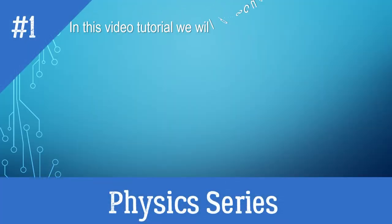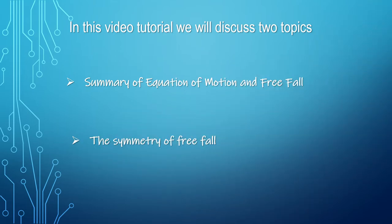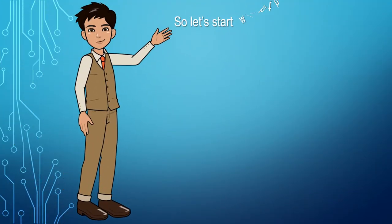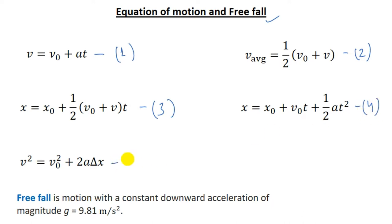Welcome to STEM Professionals. In this video we'll discuss two topics: a summary of equations of motion and free fall, and the symmetry of free fall. In the last few videos we discussed equations of motion and free fall. I've written all five derived equations. Free fall is the motion with constant downward acceleration of magnitude 9.81 meters per second squared.